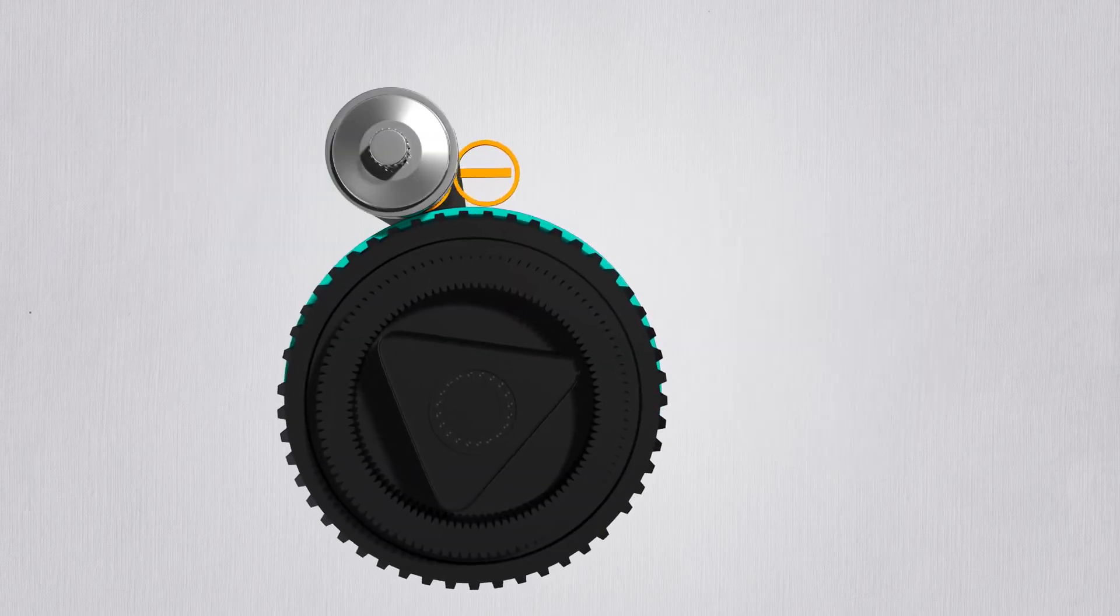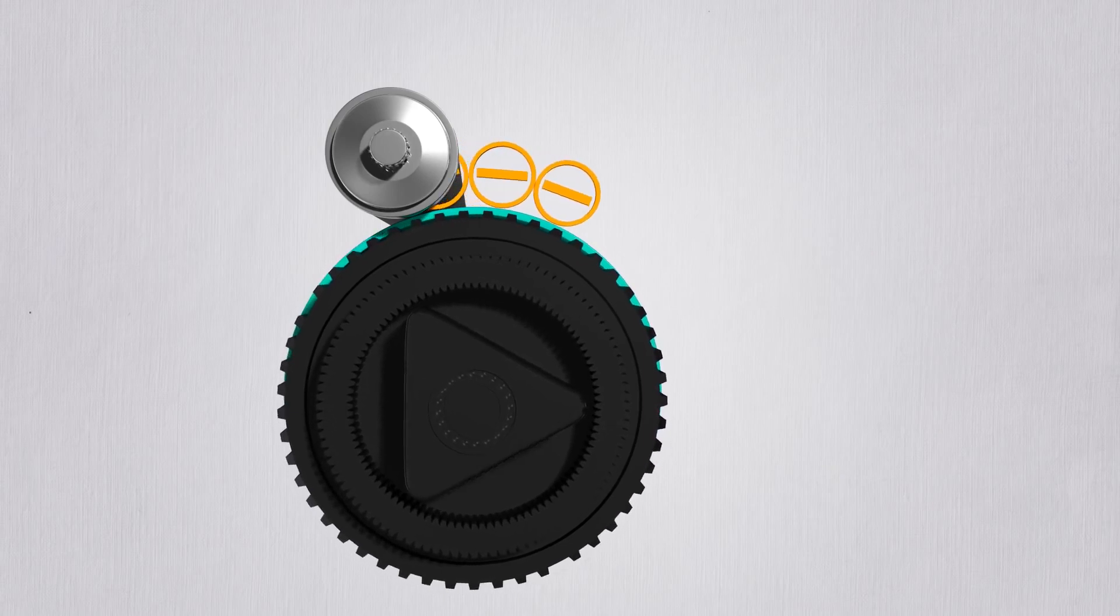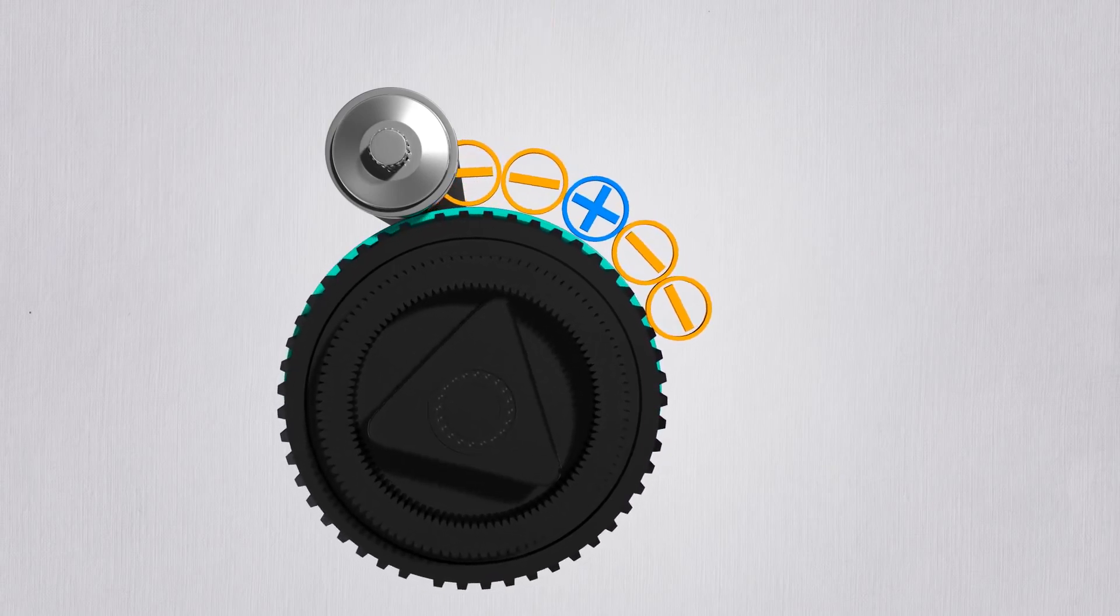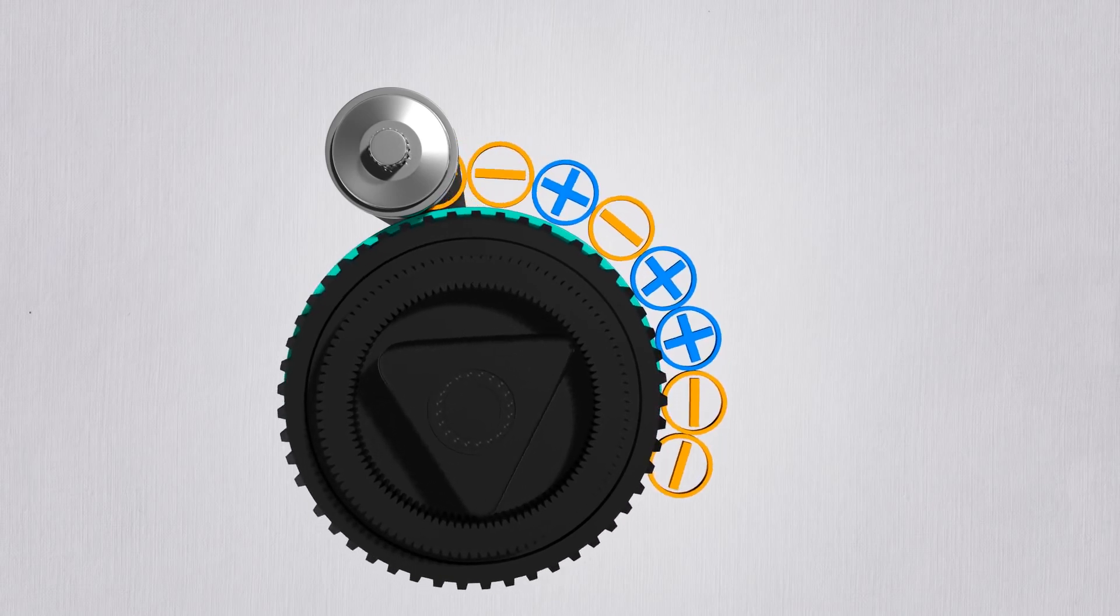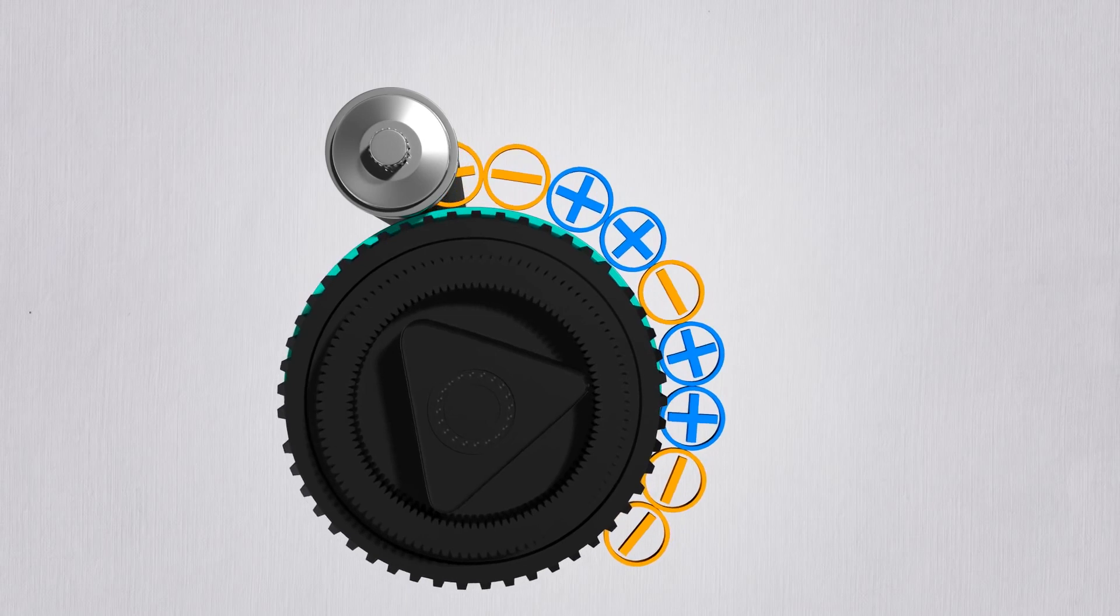First, using the charging roller applies a negative charge on the OPC drum surface. On the negatively charged drum surface, laser applies the desired drawing to be printed. Then the places that the laser has been applied are now positively charged.